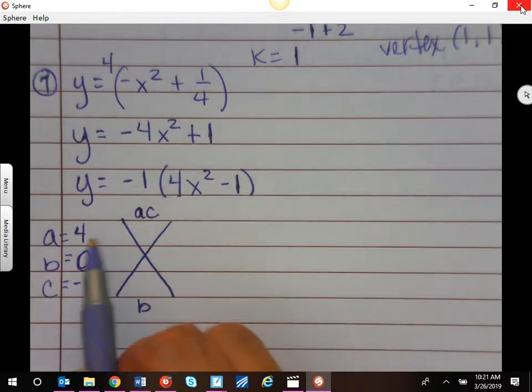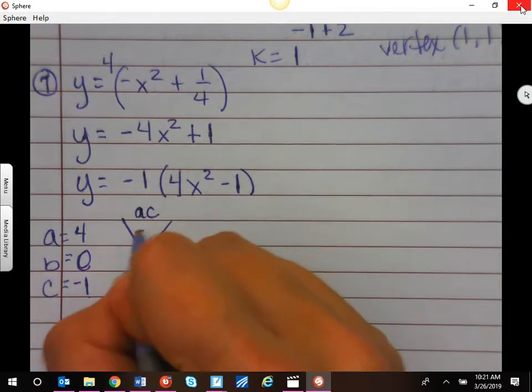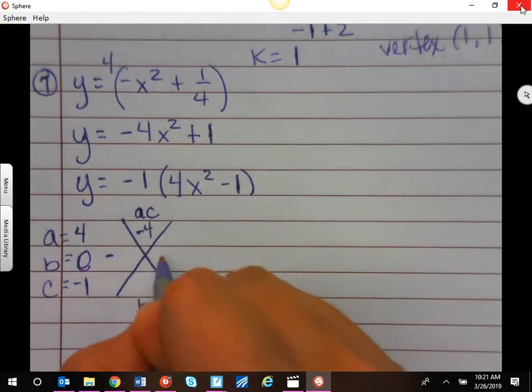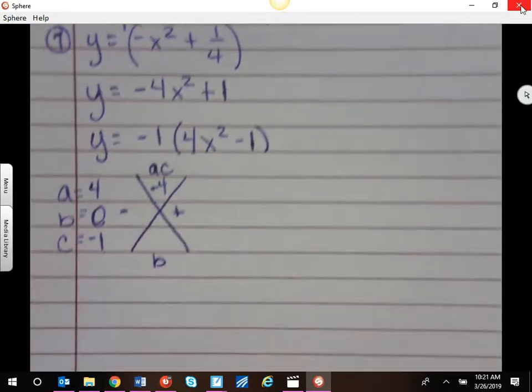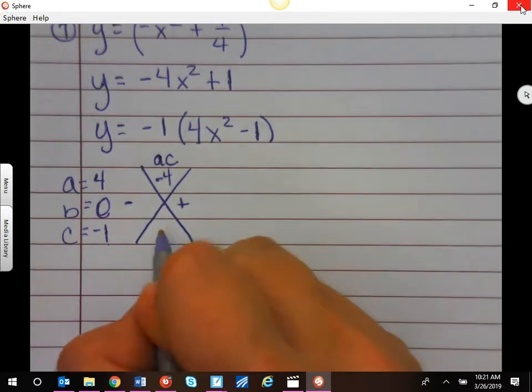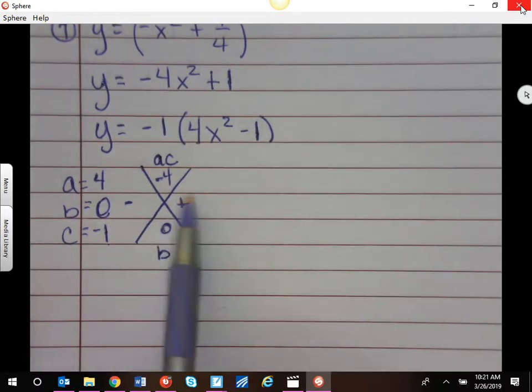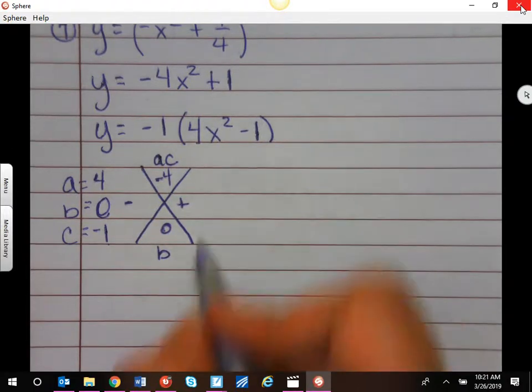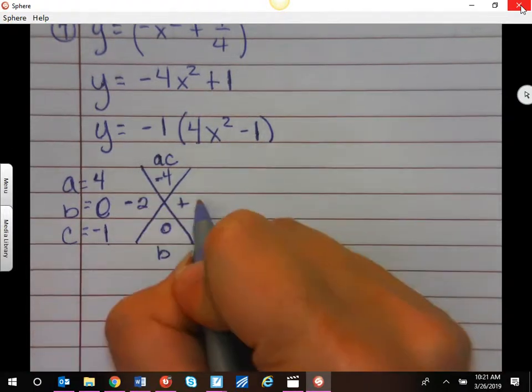So a times c, 4 times negative 1 is negative 4, so that means my signs are different. My b is 0, so what are the factors that make negative 4 and have a difference of 0? We have negative 2, and we have positive 2.